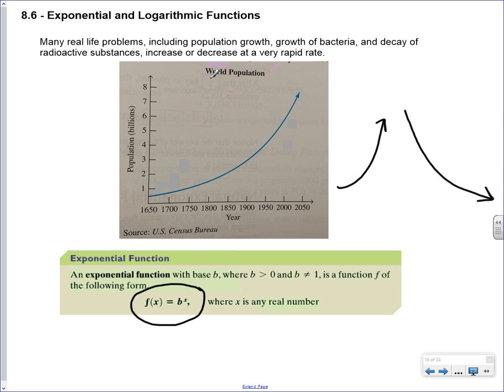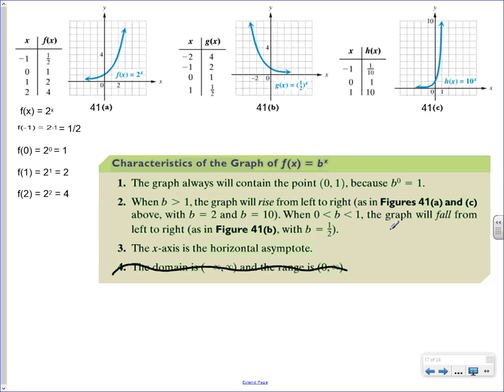World population is a big example we cover in this section, because world population is an exponential growth function — it's growing at an exponential rate right now. Here are some characteristics of exponential functions. The graph will always contain the point (0, 1), which is on all these graphs because any base raised to the power of 0 equals 1.